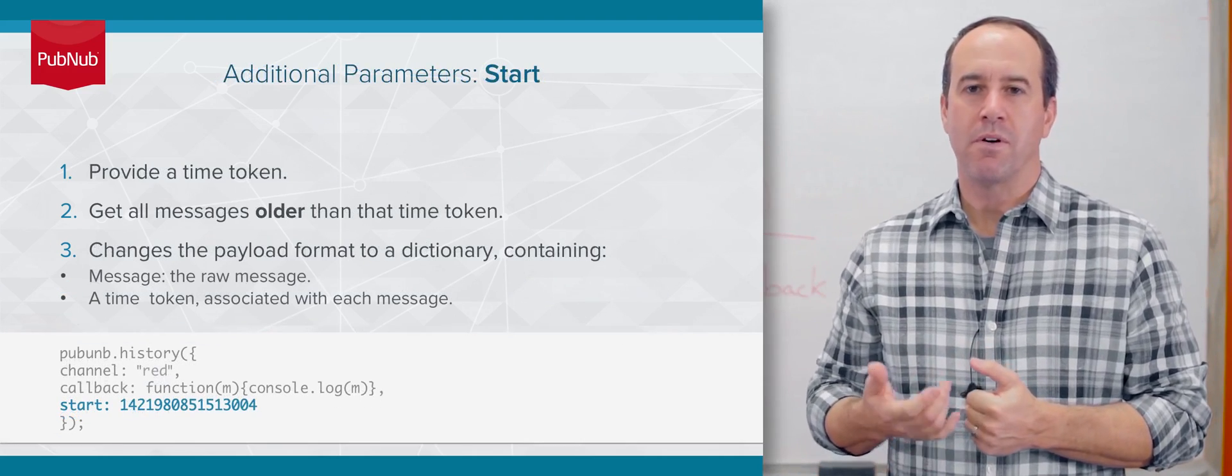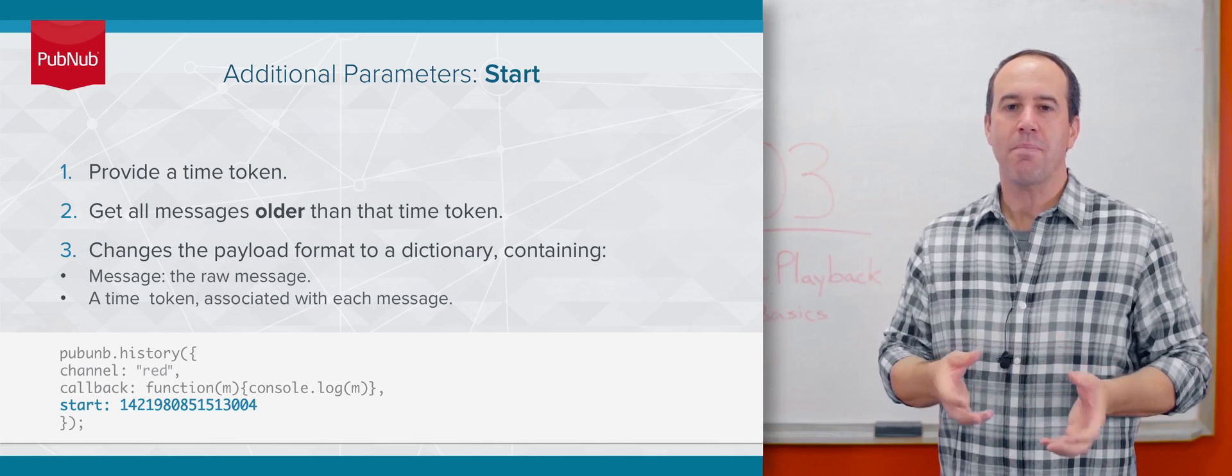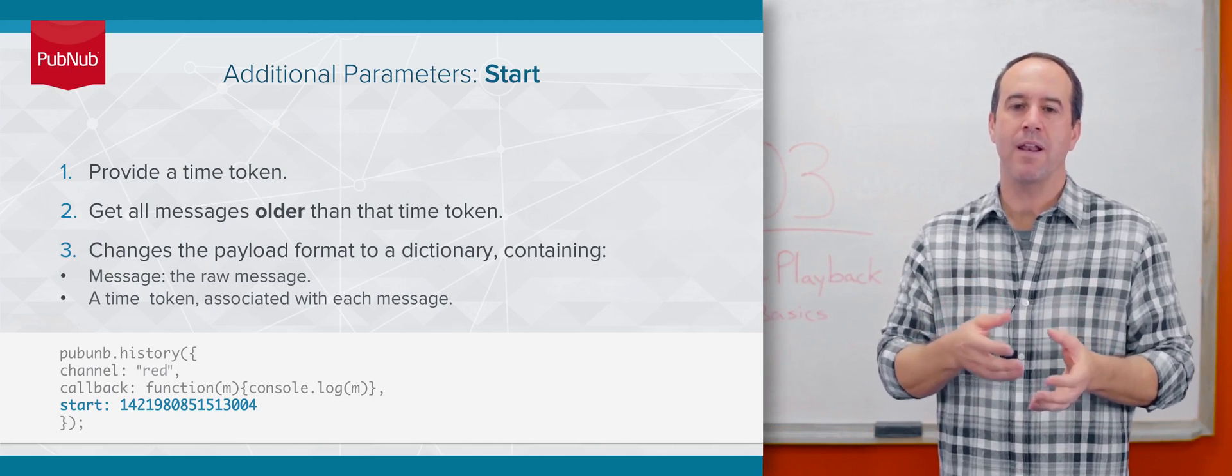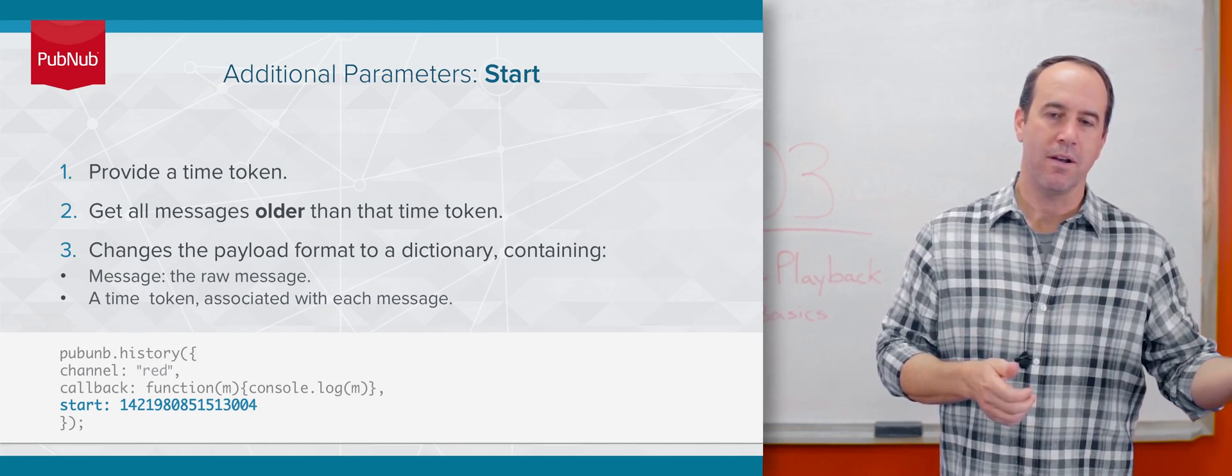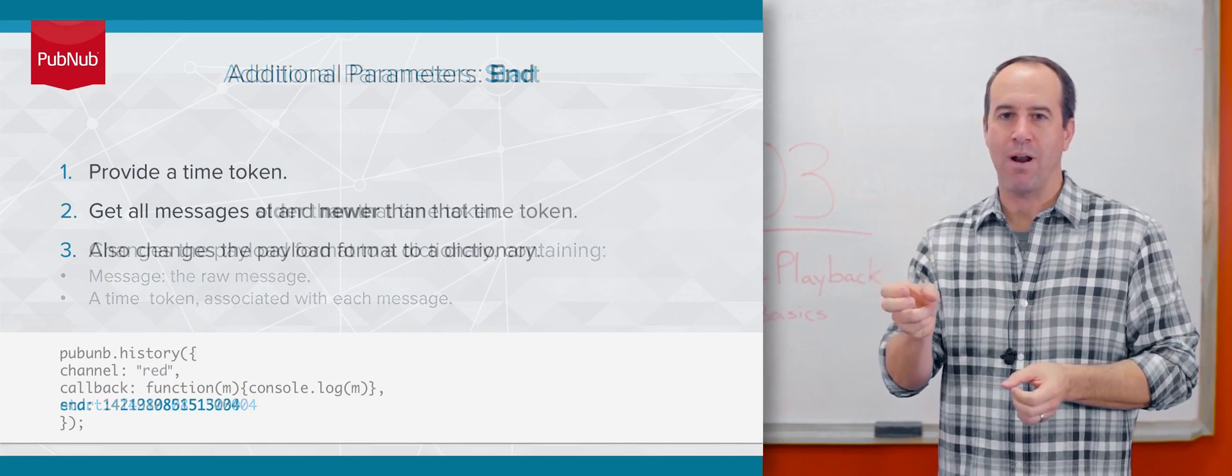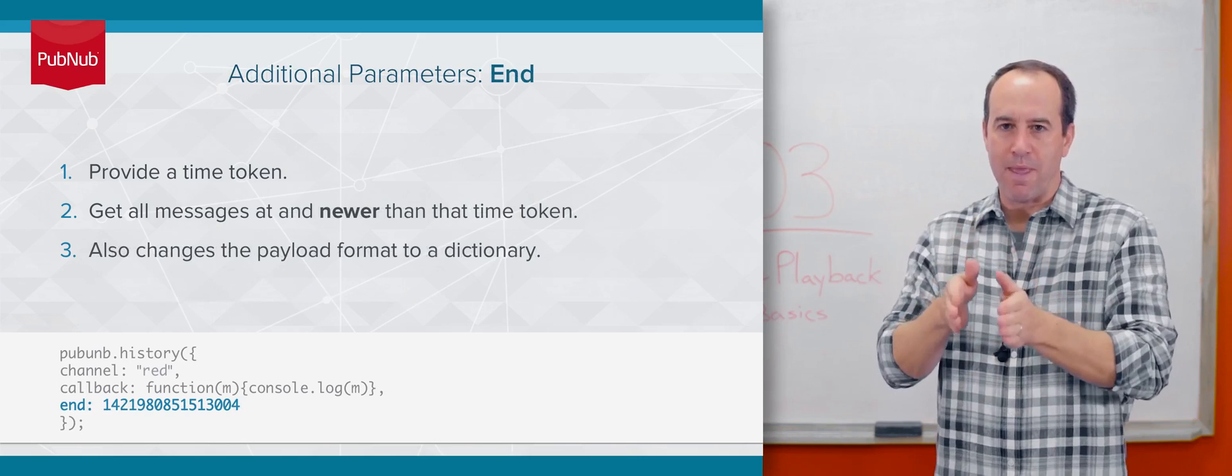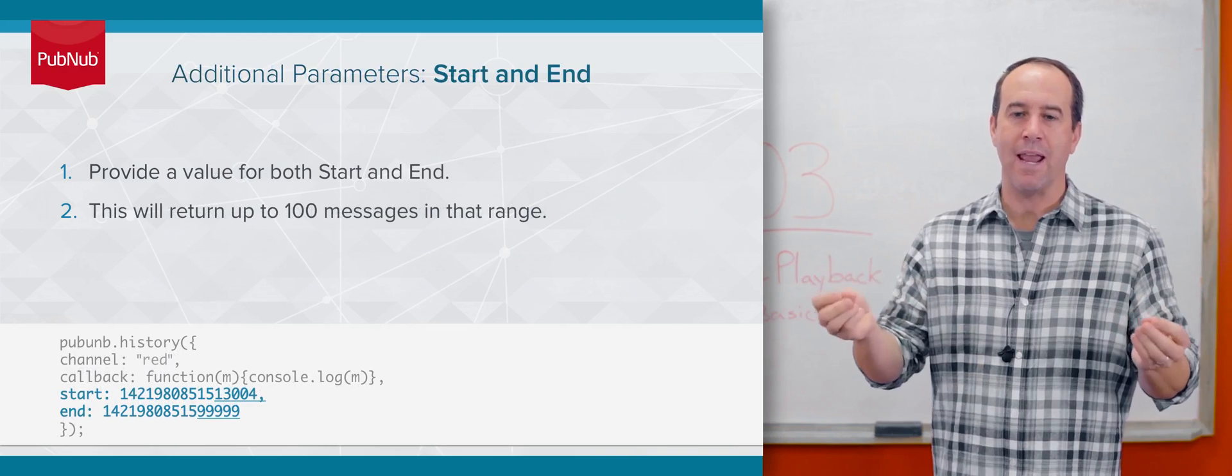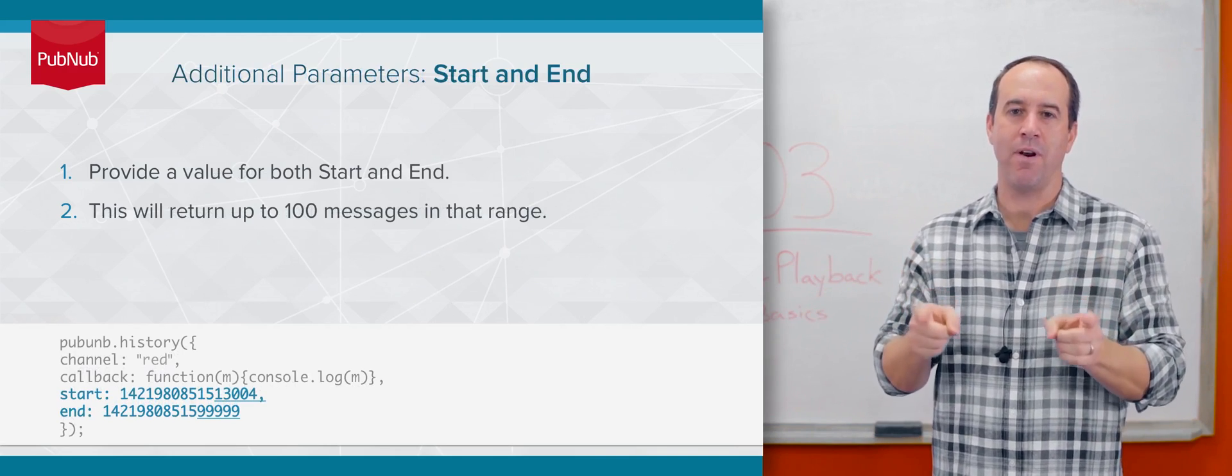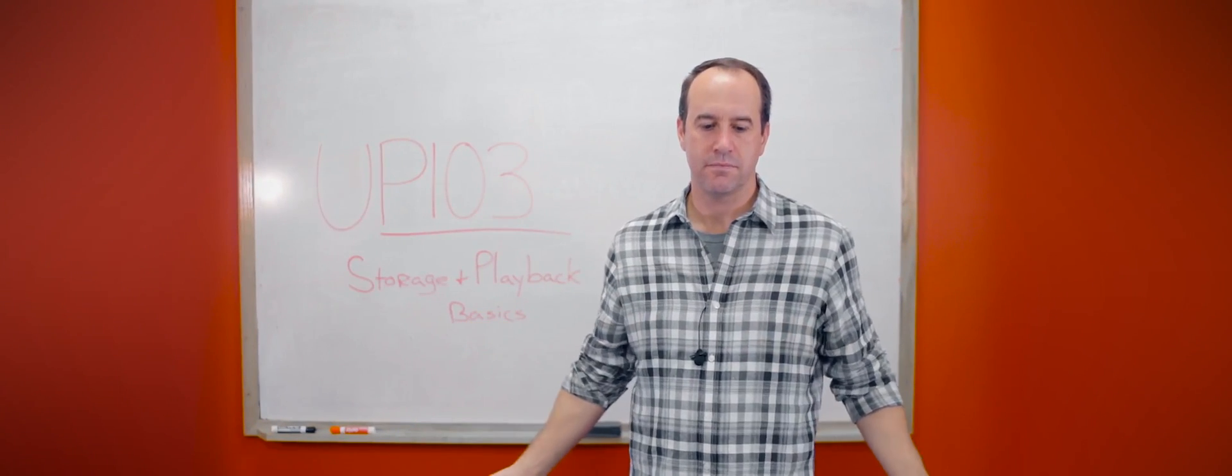Two other useful parameters are start and end. The start parameter works so that if you provide a time token, you'll get all messages from that time token and older. If you provide a time token for the end parameter, you'll get messages from that point in time and newer. You can also provide a time token for both start and end, and you'll get all messages in that time range. And that's it.